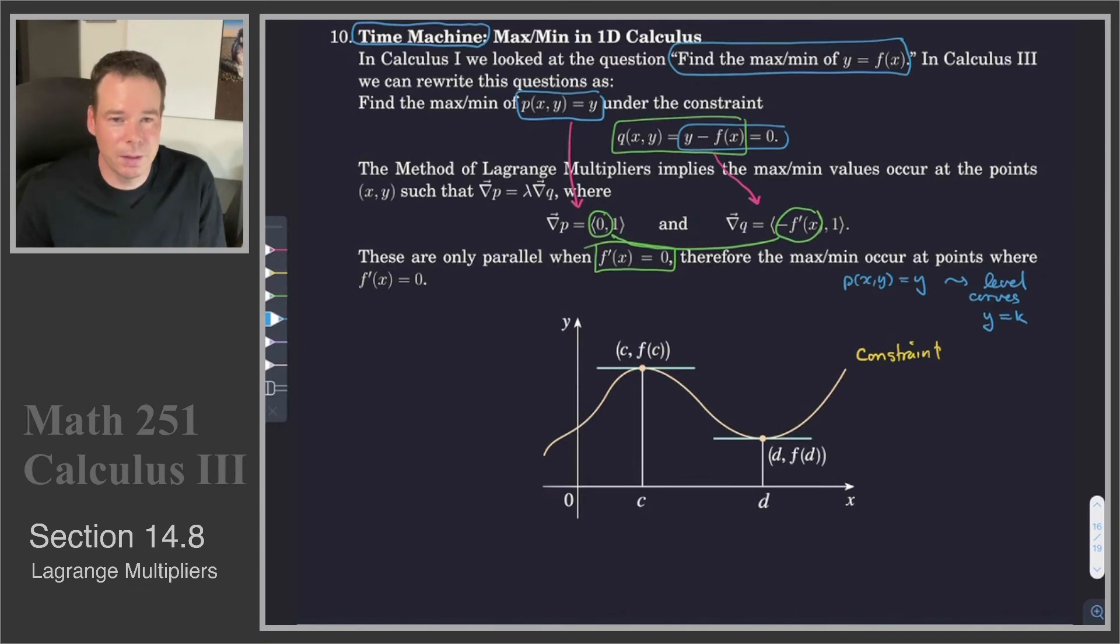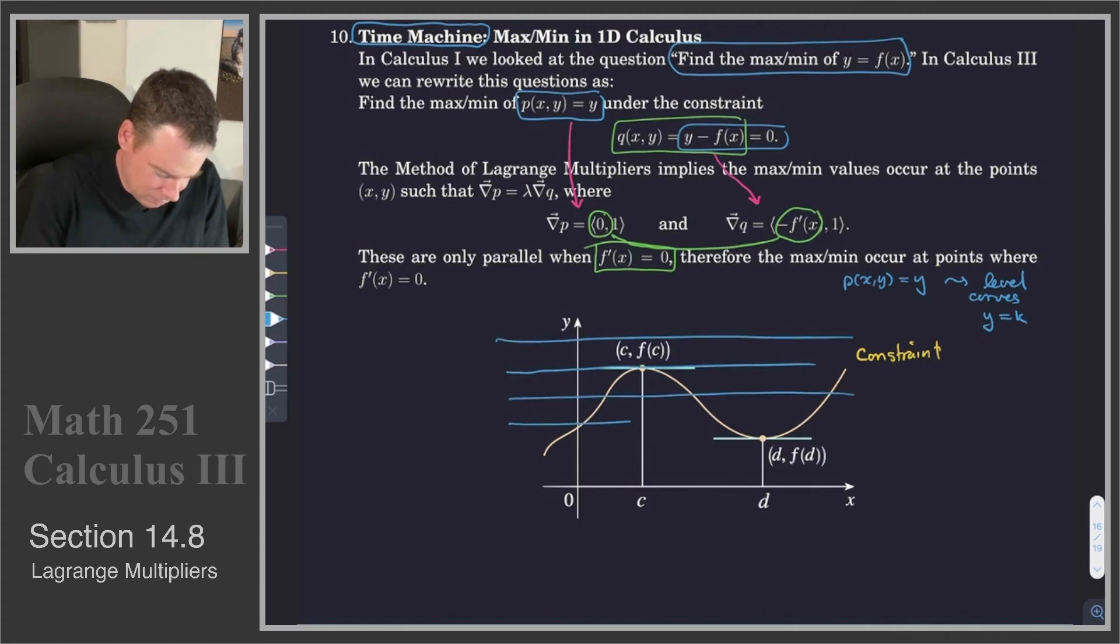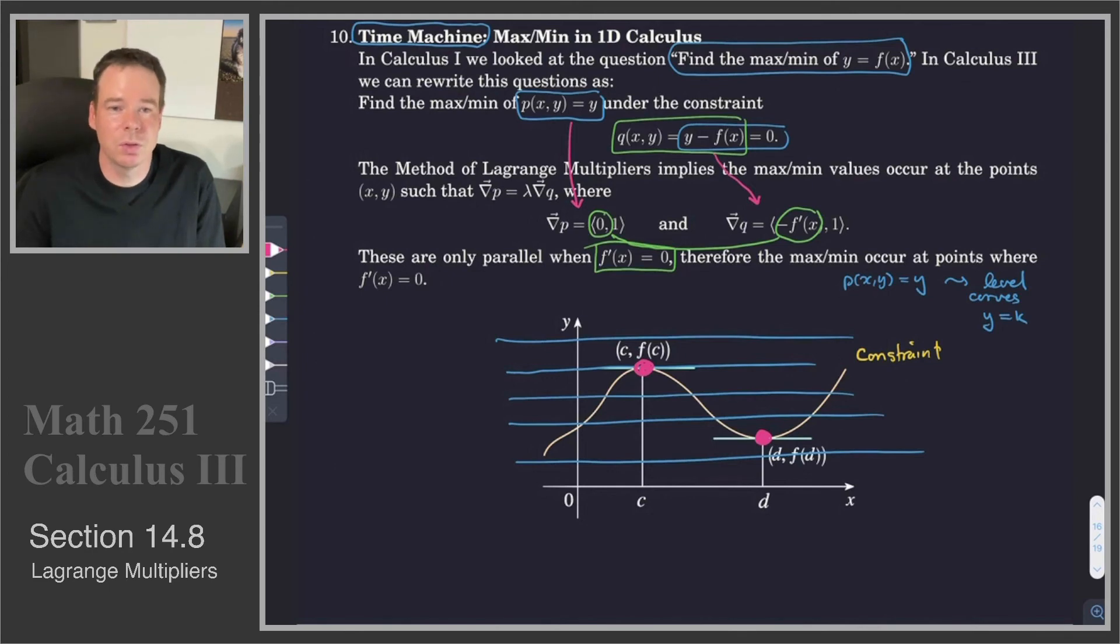The method of Lagrange multiplier says, look at the point where your constraint curve is tangent to your level curves. Our level curves are horizontal lines. So they look like this, all the way up and down across the page here. And we're interested in the places where the constraint curve is tangent to our level curve. And that's going to be that point, and that point. Those are the places where the constraint curve has a horizontal tangent.